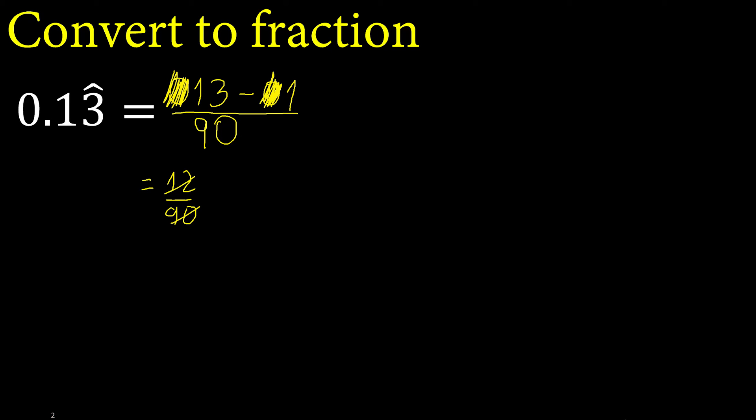Simplify because it can be divided by the same number. Divided by 2: 12 divided by 2 is 6, 90 divided by 2 is 45. Divided by 3: 6 divided by 3 is 2, 45 divided by 3 is 15. Finish.